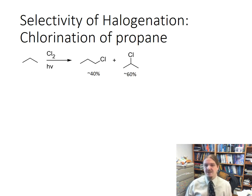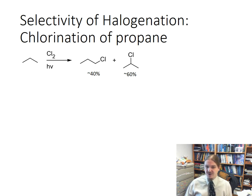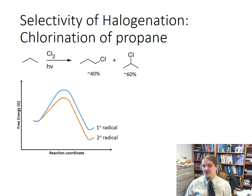It turns out that the product distribution is actually about 40% 1-chloropropane and 60% 2-chloropropane. If you think about what's going on in the reaction, the reaction leading to 1-chloropropane goes through a primary radical, and the reaction leading to 2-chloropropane goes through a secondary radical. We know that secondary radicals are more stable. Here is a reaction coordinate energy diagram for the first step of this reaction, the formation of the alkyl radical.